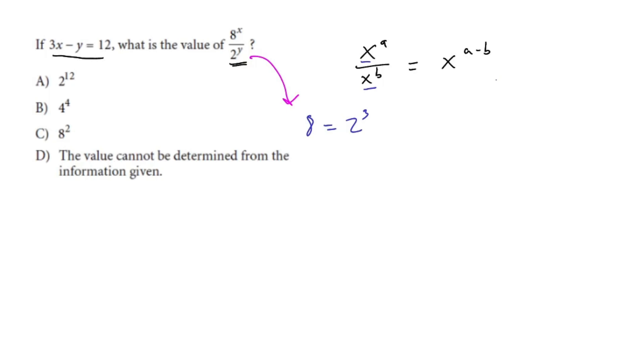So instead of writing 8 to the power of x, we can write 2 to the power of 3x over 2 to the power of y. Now moving on from here, it should be really simple to solve. If I have 2 to the power of 3x over 2 to the power of y, let's look at this exponent rule. This would be equal to 2 to the power of 3x minus y.